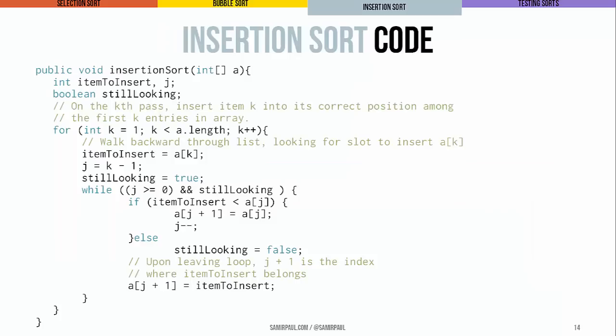The Java code for insertion sort is essentially the same as the algorithm description. The big idea is that at any given moment after finishing a pass, we know that if we just looked at element k, the first k elements are sorted. So once we get to k as the final element in the array, we know all elements will be sorted once that pass is done.